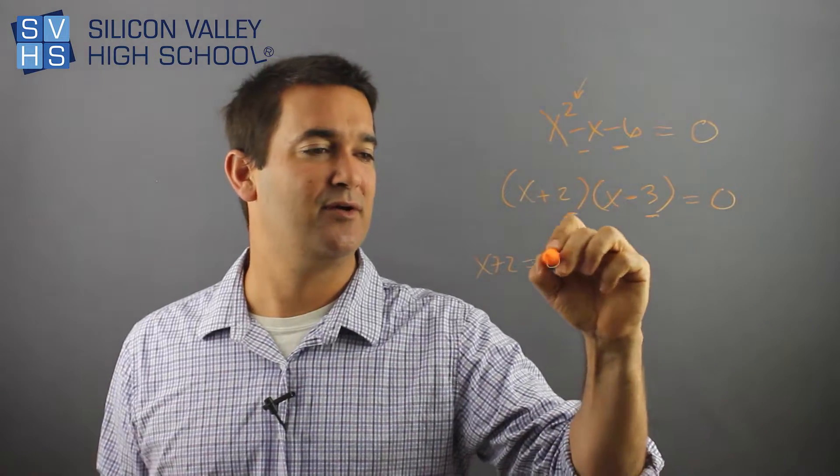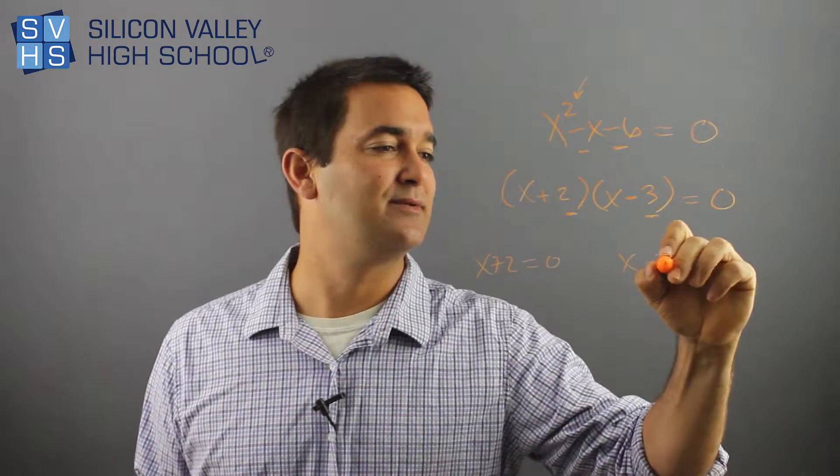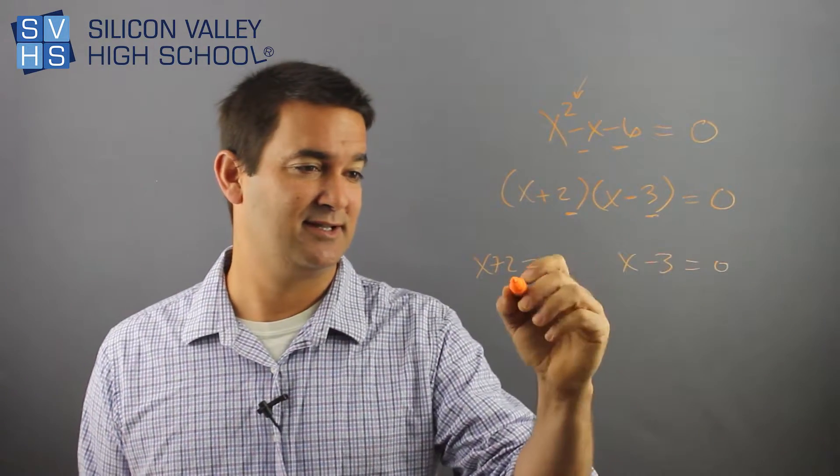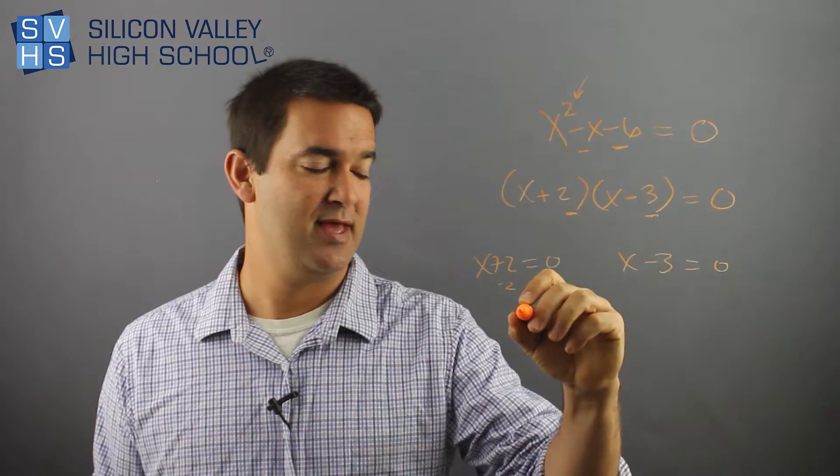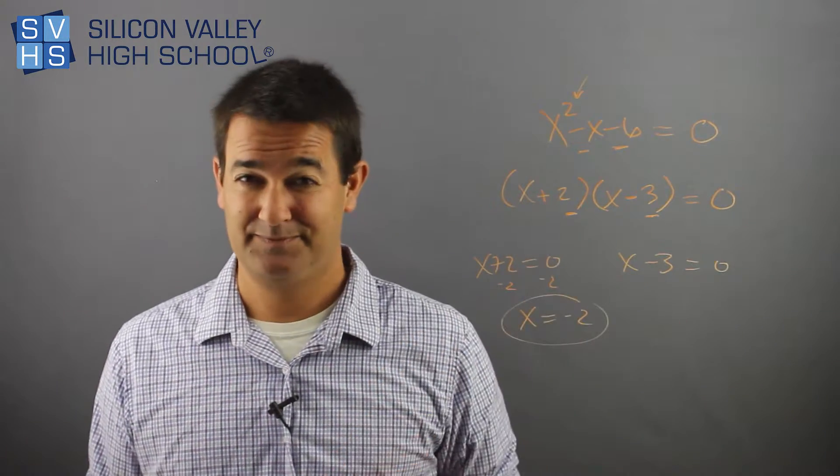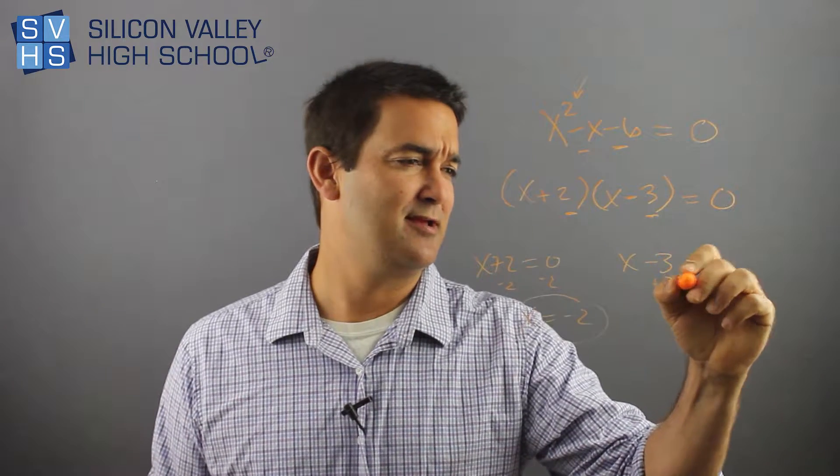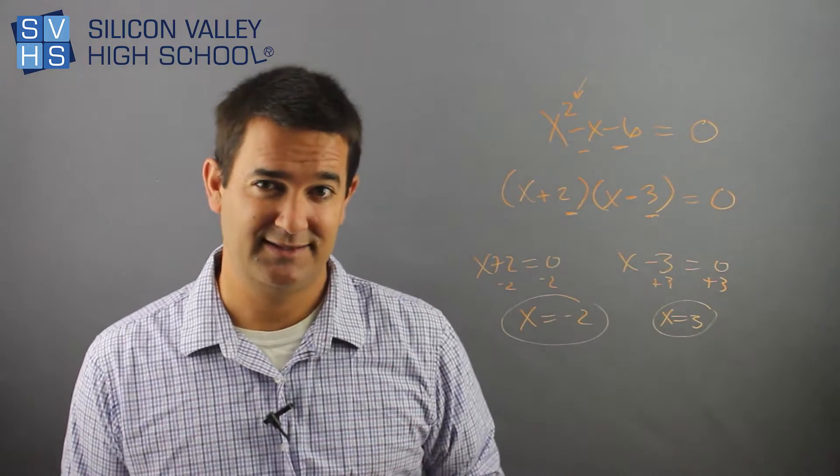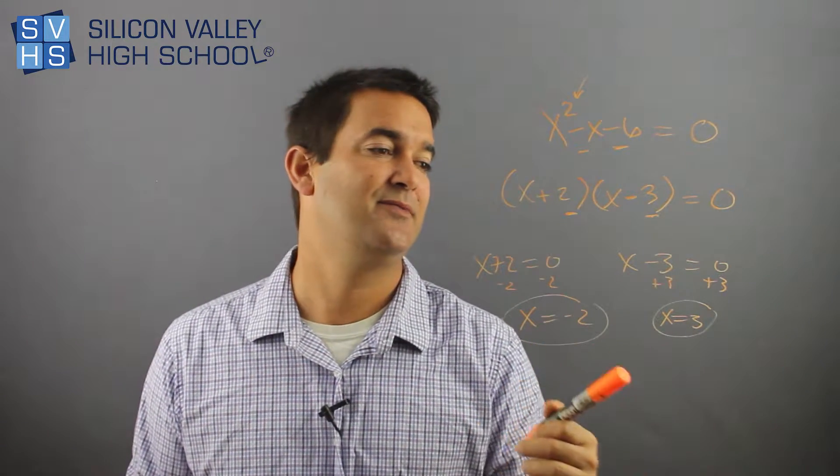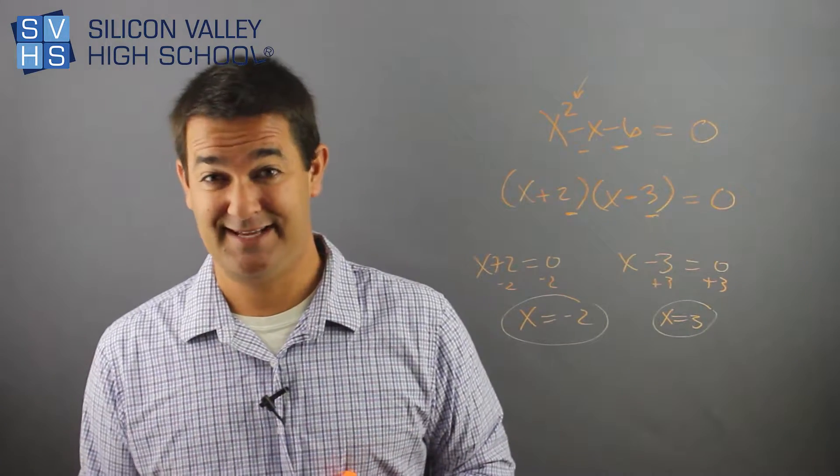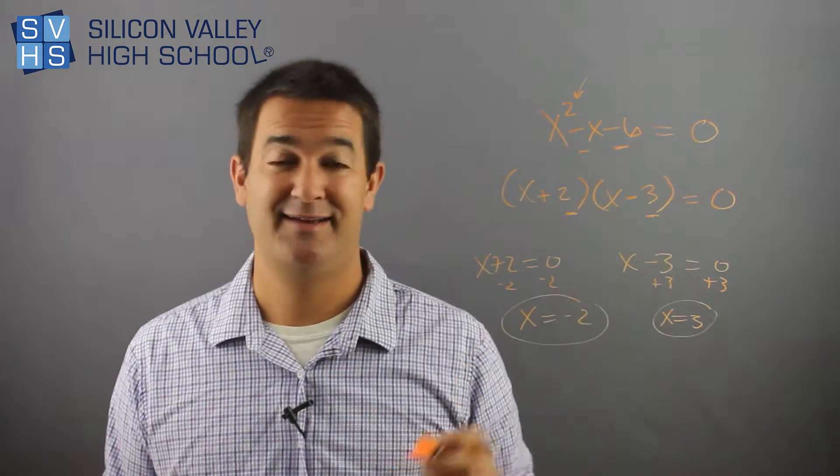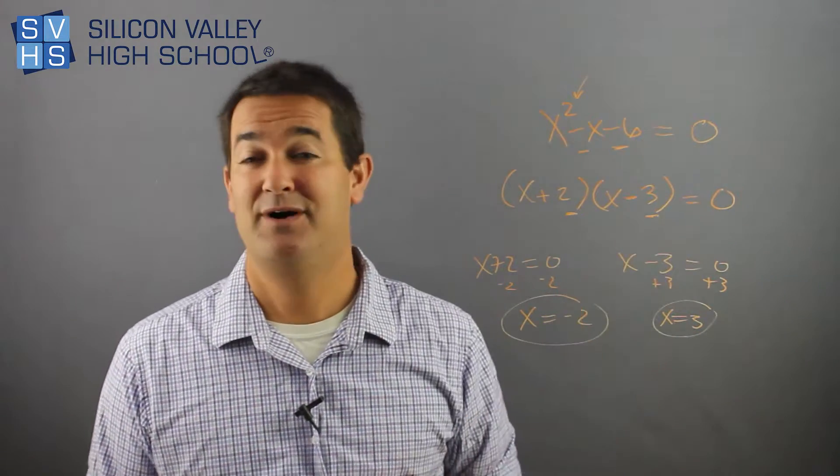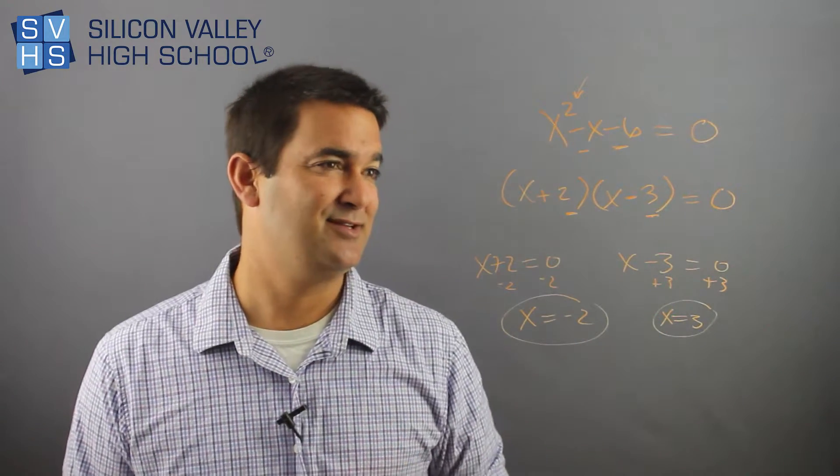First guy, X plus two equals zero. Other guy, X minus three equals zero, and totally treat them as two separate problems, solve them, and those would be my answers. Look, minus two, minus two, X equals negative two, box it, circle it. This one, plus three, plus three, X equals three, done. So my two answers to this problem are negative two and three, and if you did it, if you plug negative two in, I bet you a hundred bucks it will come out to zero. And if you plugged in three, I bet you a hundred bucks it will come out to zero. And that's how you do this.